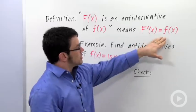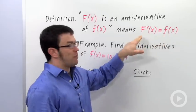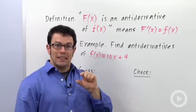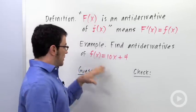So when you look at this relationship, little f is the derivative of big F. Big F is an antiderivative of little f. So you basically guess and check to find antiderivatives.